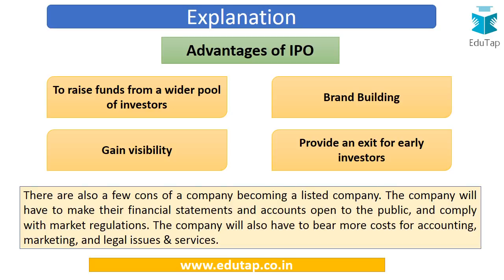To answer this we must be aware about the advantages of an IPO. Companies come up with an IPO to raise funds from a wider pool of investors — there are different categories of investors who put in their money. IPO helps in brand building: if a company like ITC comes up with an IPO, it is essentially publishing and advertising itself, showing it is a big company expanding into different areas of operation. This helps the company gain visibility in the market.